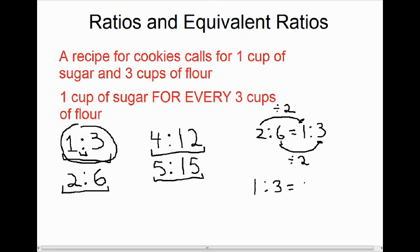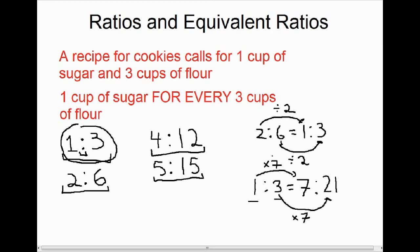For example, if I have a ratio of one to three — one cup of sugar for every three cups of flour — and I make a recipe that has seven cups of sugar, I need a lot of flour. We changed one to seven by multiplying the recipe by seven. So to find how many cups of flour, we also multiply three by seven. The equivalent ratio of one to three is seven to twenty-one. Equivalent ratios are written by multiplying or dividing both numbers by the same value.